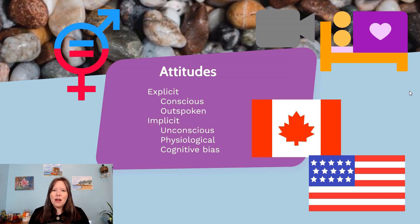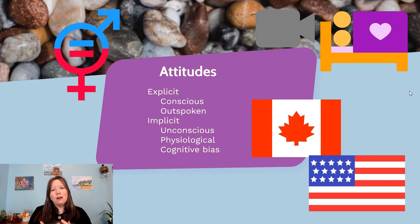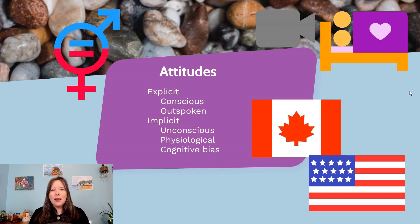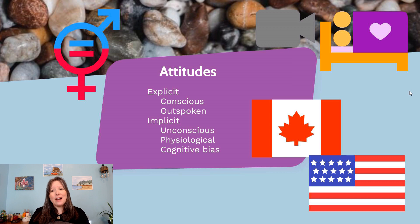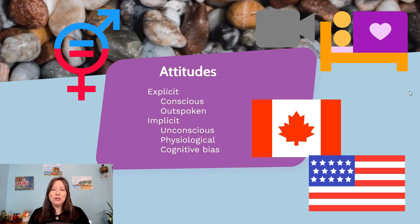We also have attitudes that may be shaping our thinking that we're not consciously aware of — these are considered implicit attitudes. These happen in an unconscious way; you're sometimes not even aware it's going on. But they do tend to impact you on a physiological level and in terms of your cognitive biases, particularly with how fast you can answer questions on a topic, or how fast you can answer questions that mismatch your biases.